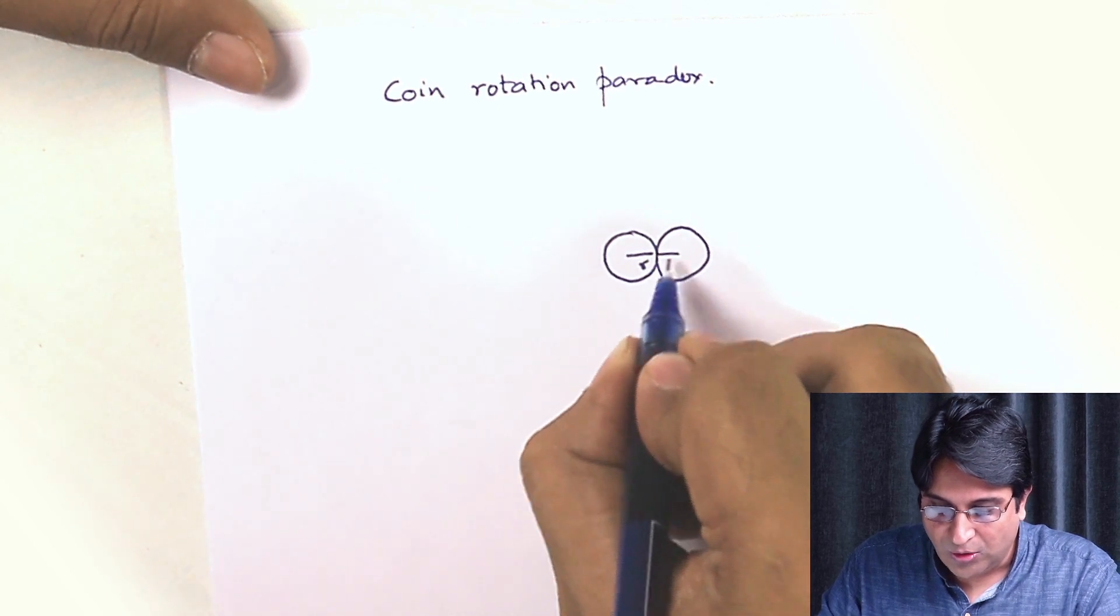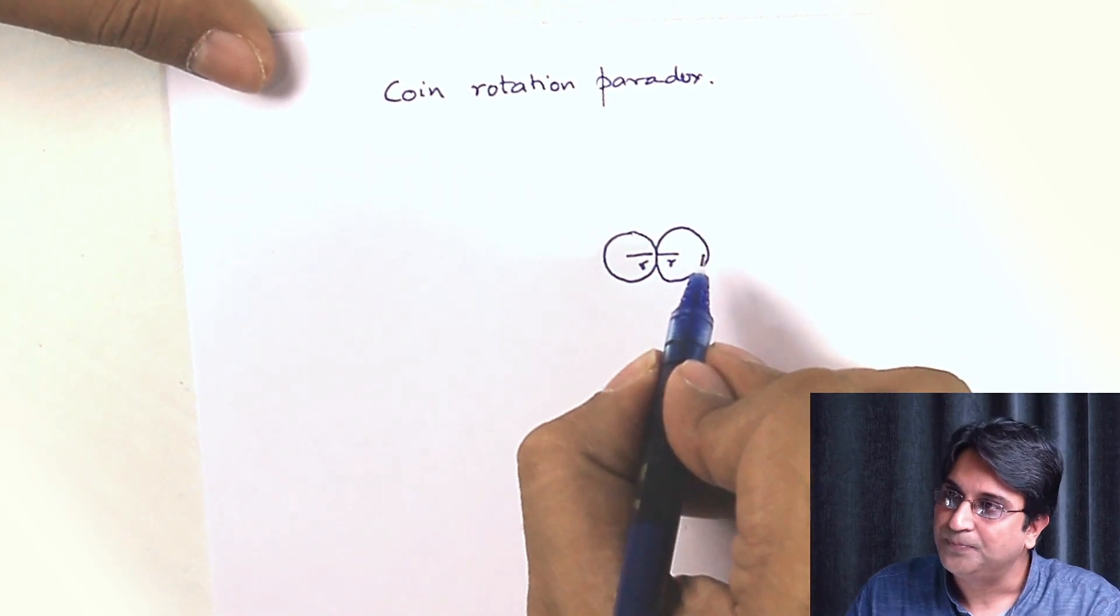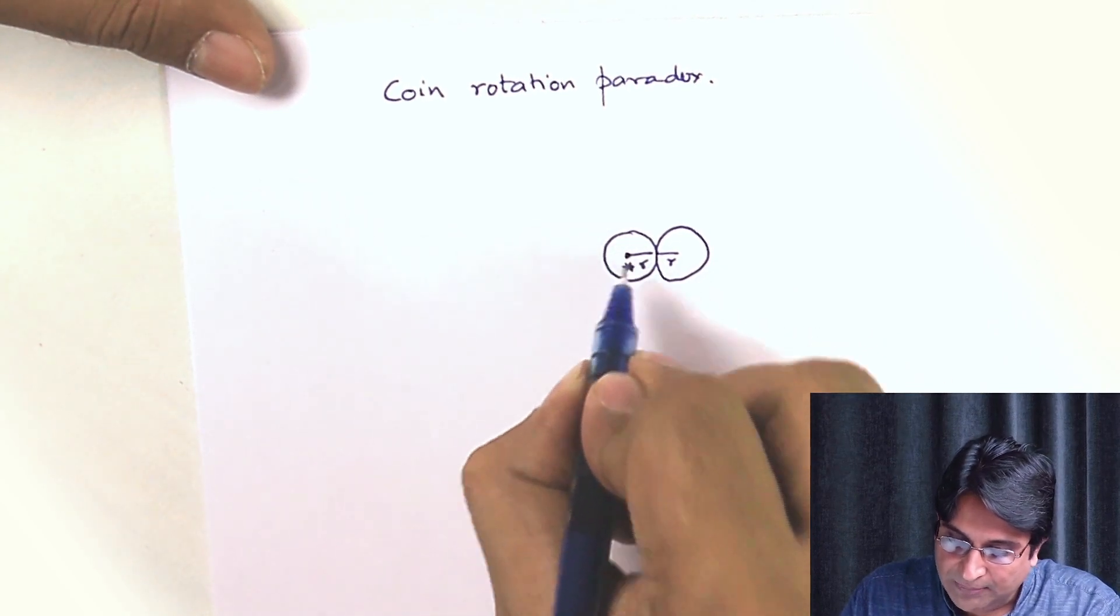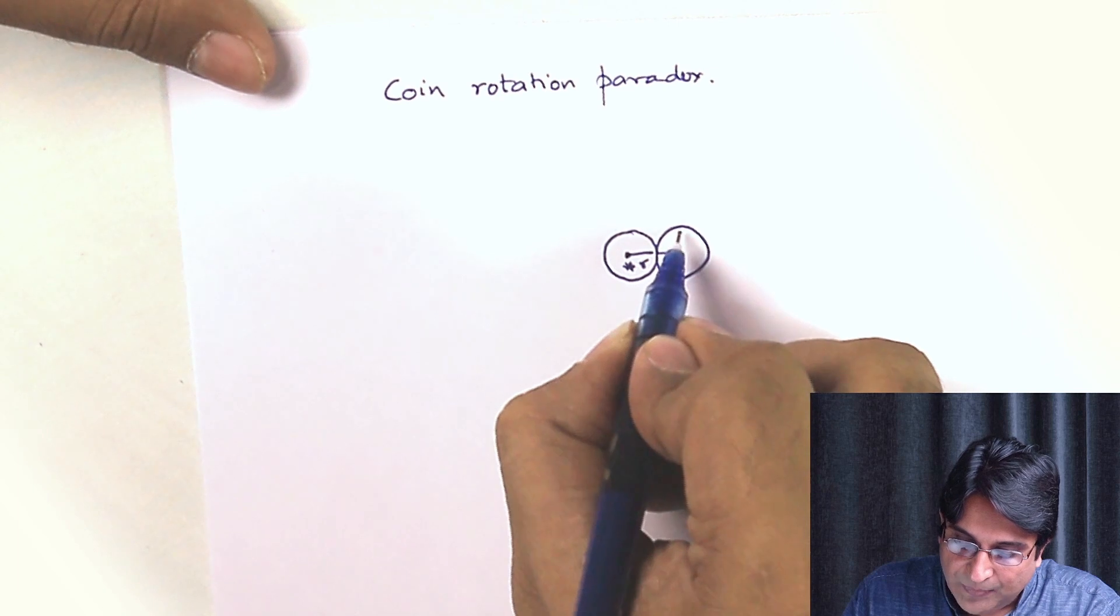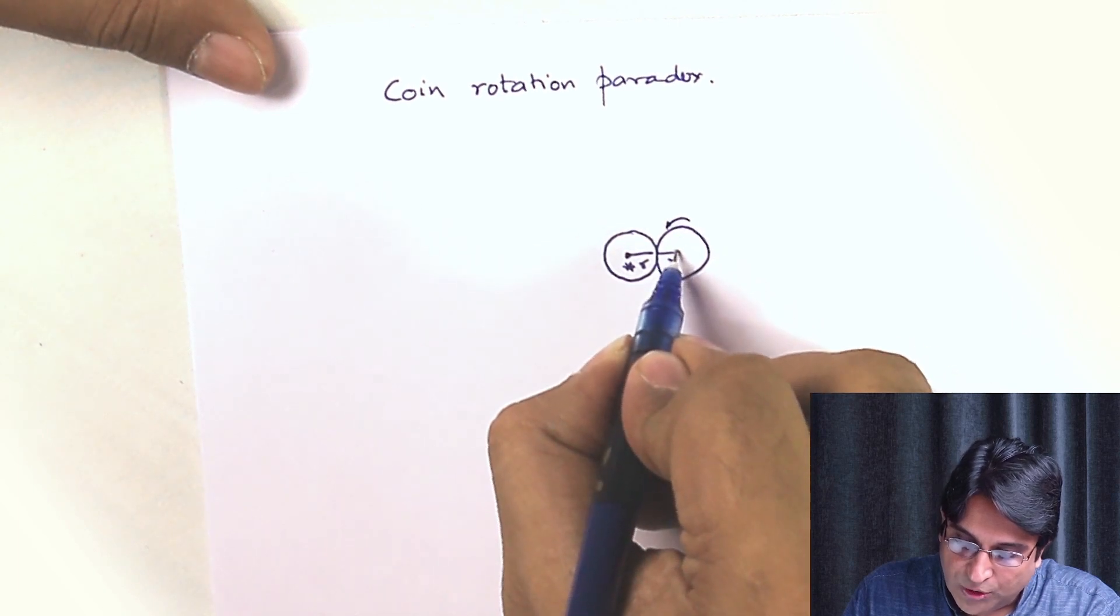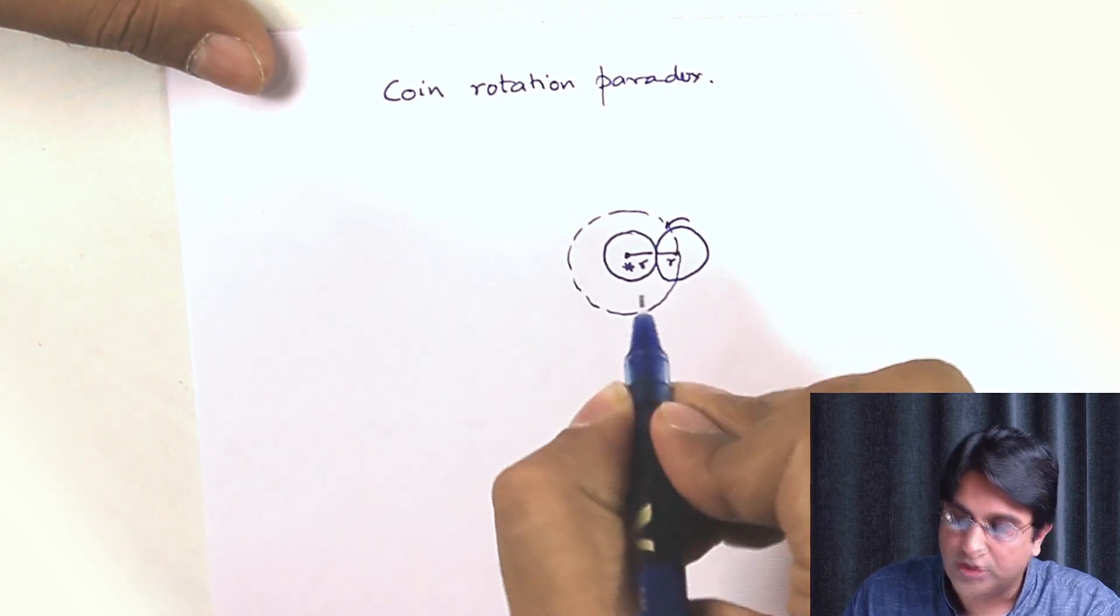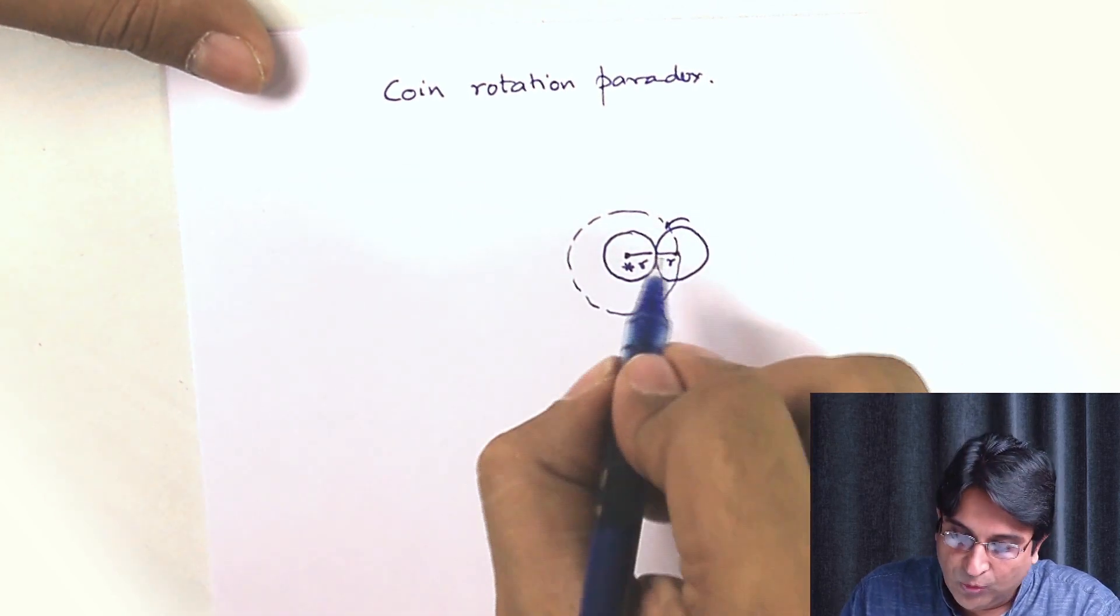Now, keeping the inner coin fixed, keep this fixed and just turn around this coin the outer coin, all around it, till it comes back to its original position.